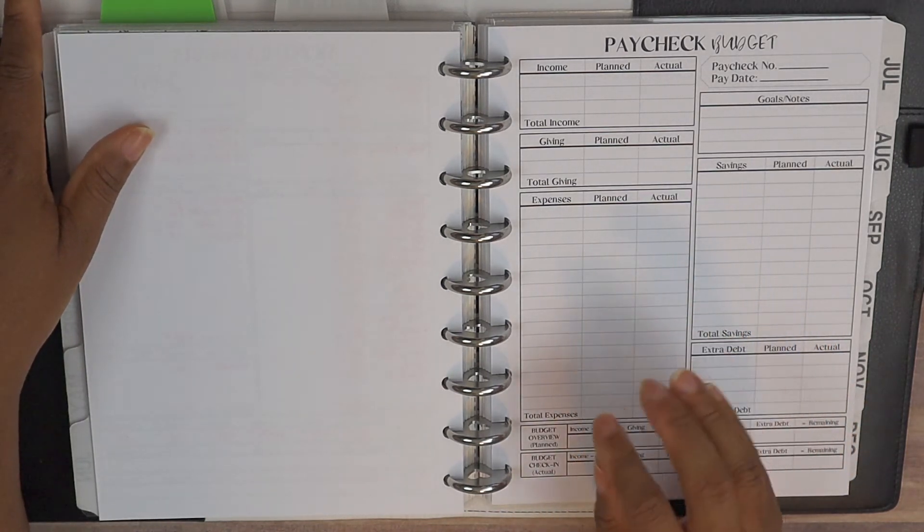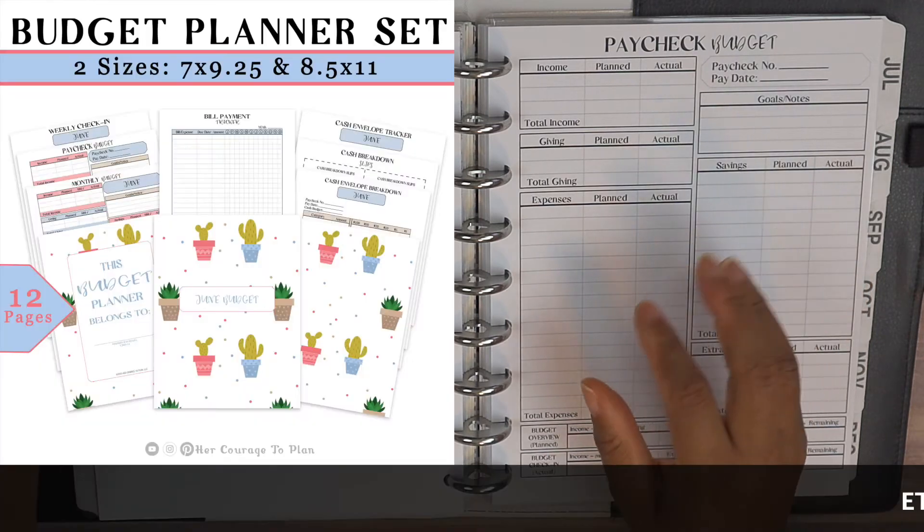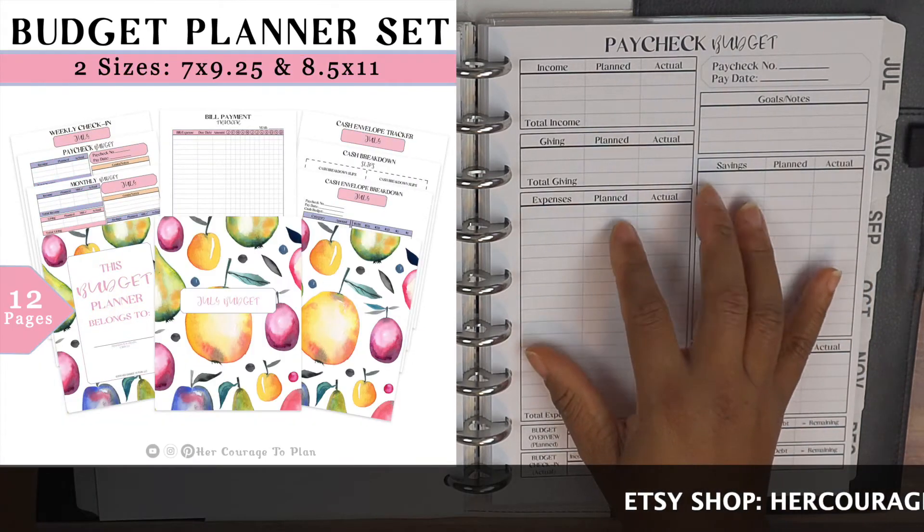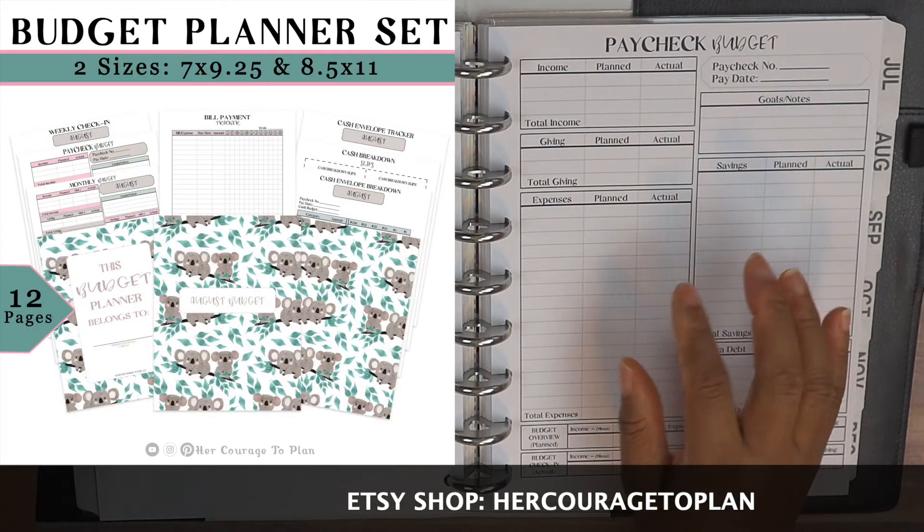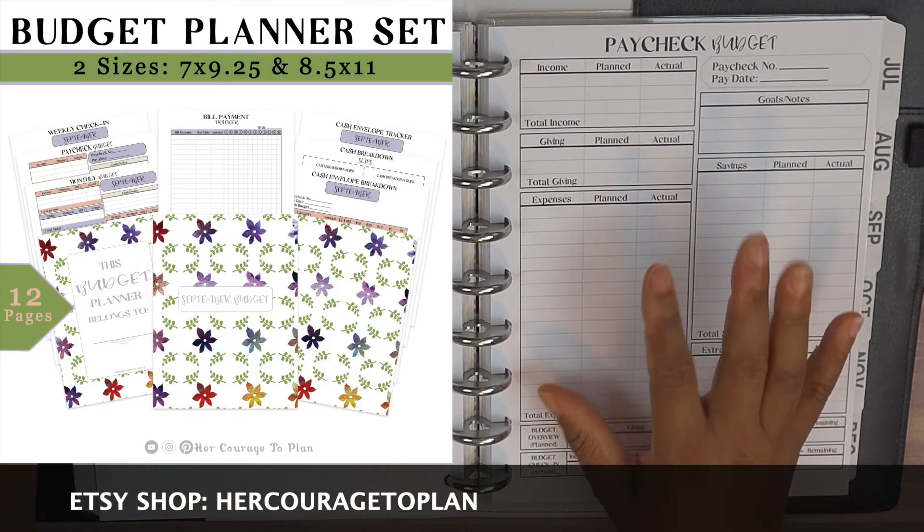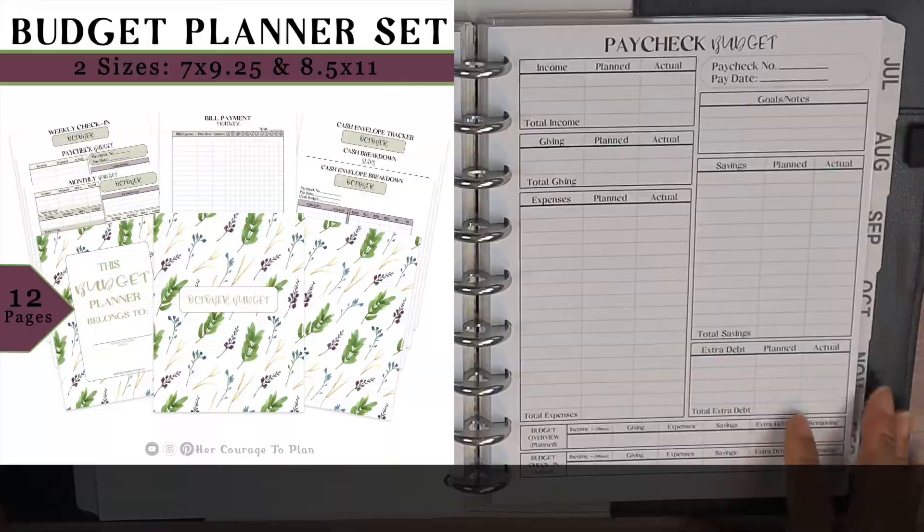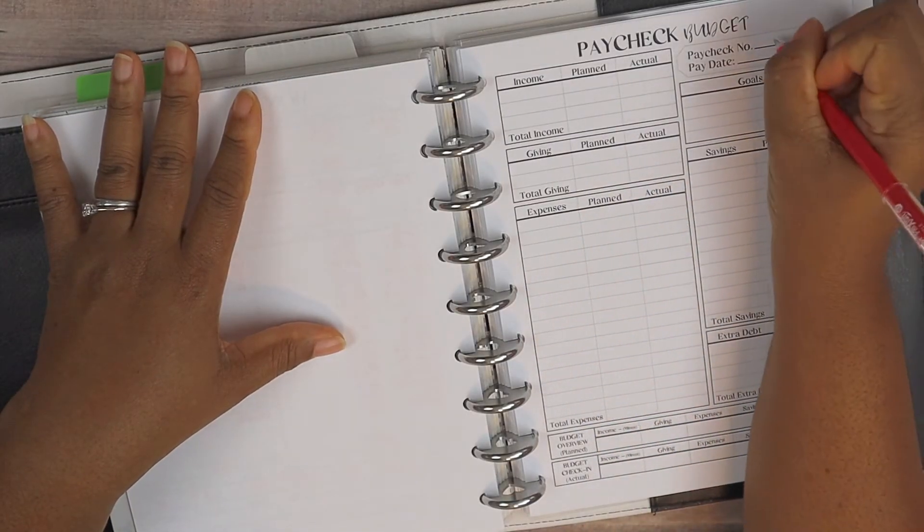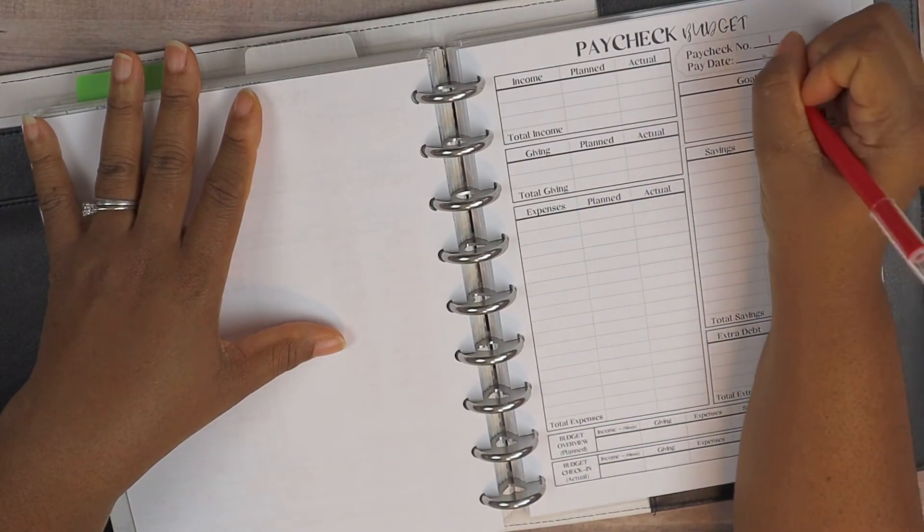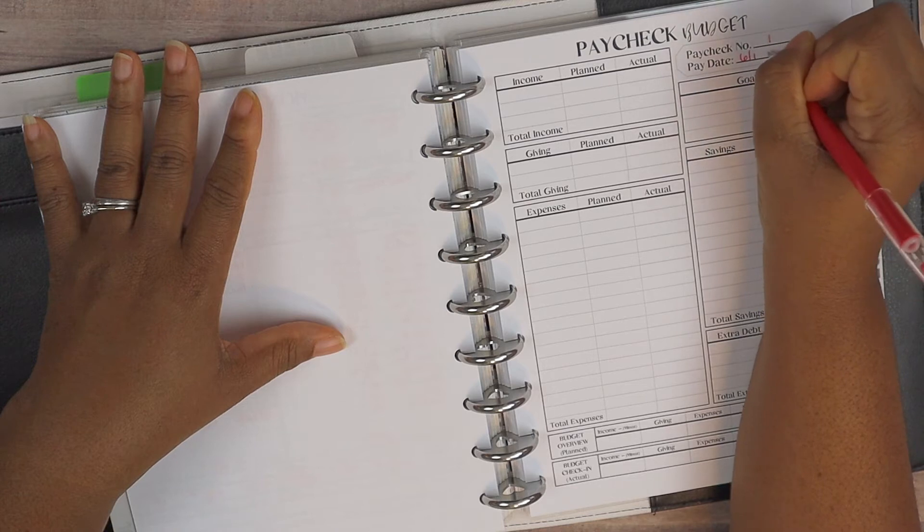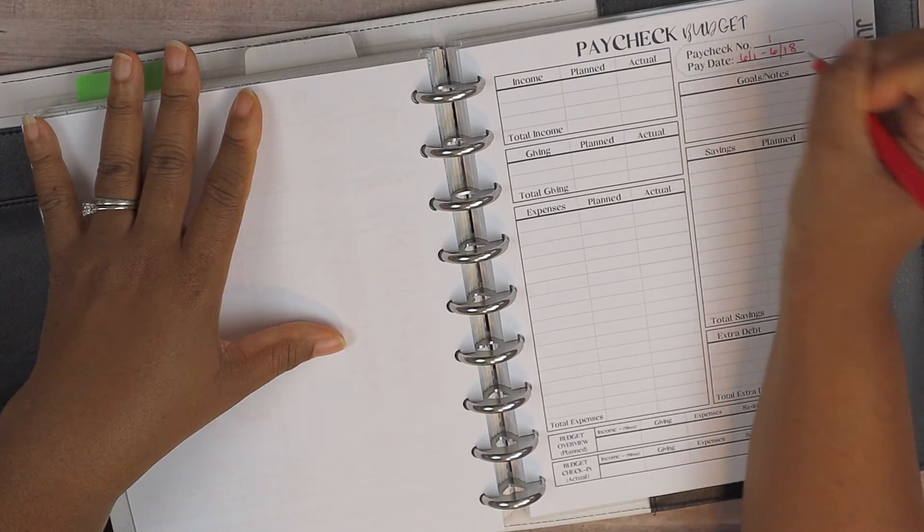If you like that pop of color, I do have the June all the way through October planner sets available and they are super cute guys, so make sure you go and check those out as well. All right, so for paycheck budget number one, it is going to be from June the first all the way through June the 18th.